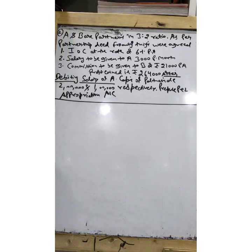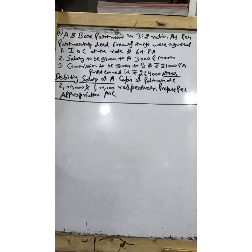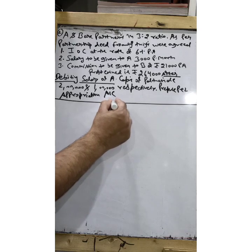Now I have changed this question a bit, so I'll call it question two. A and B are partners in 3:2 ratio. As per the partnership deed: interest on capital at 6% per annum, salary to A ₹3,000 per month, commission to B ₹21,000 per annum. But now, profit earned is ₹2,64,000 after debiting salary of A. Capitals of partners are ₹2,01,000. Prepare P&L appropriation account.